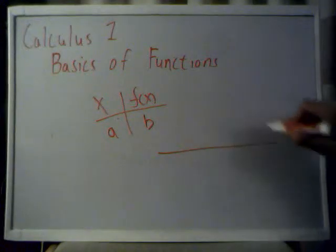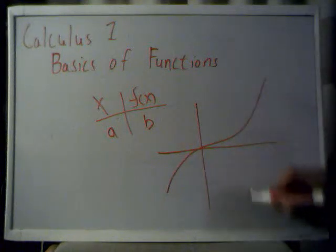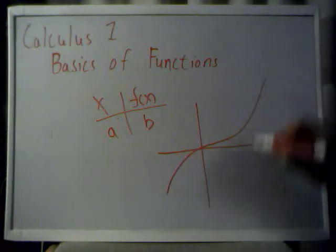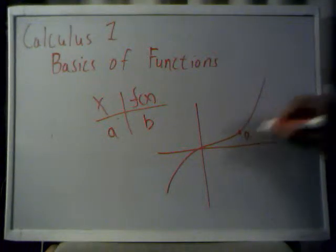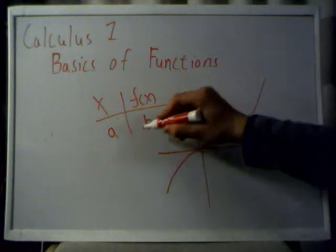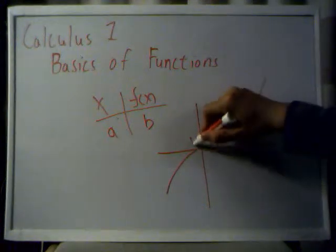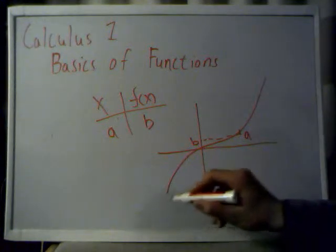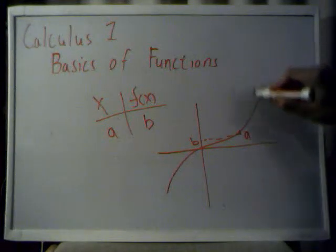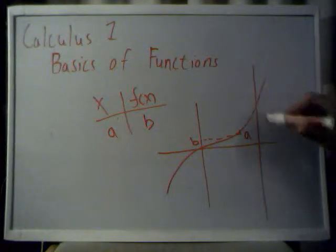In other words, if you have a function graphically, say just a random function here, for any given value x, we'll call this a, there can only be one value on f of x, and this is b. The vertical line test basically says that anywhere in the function, you can draw a vertical line through it, and this vertical line will only touch one point on the curve.